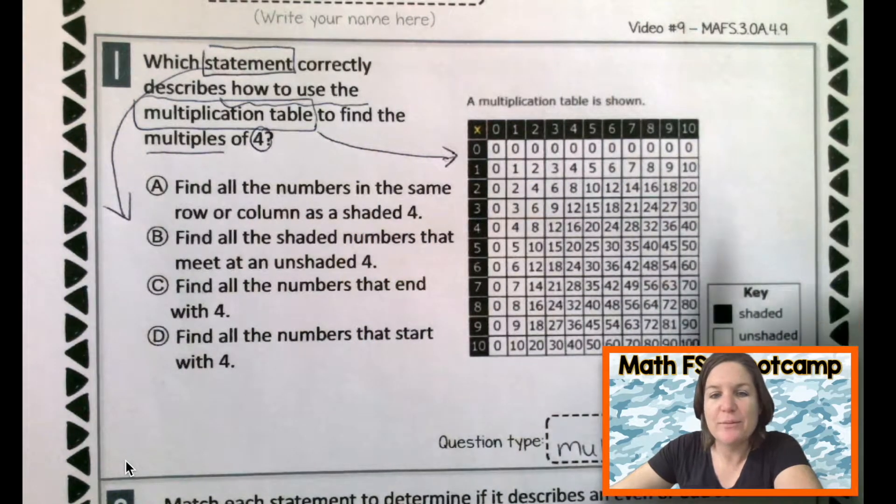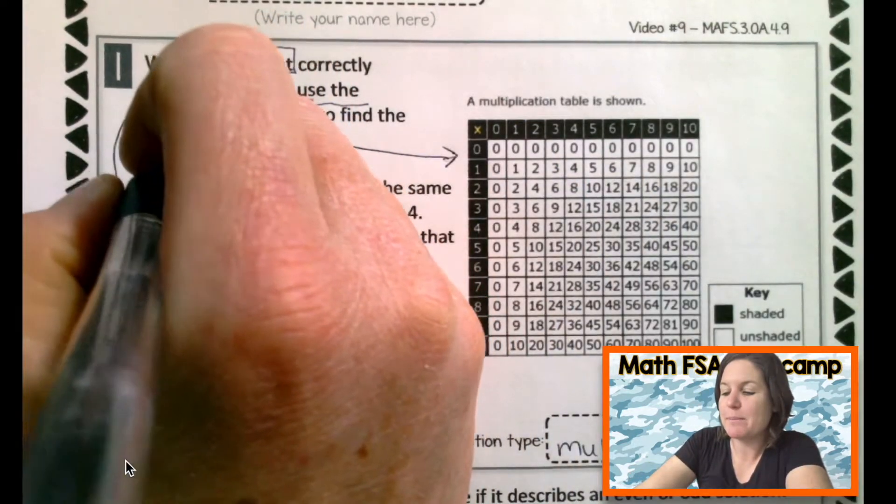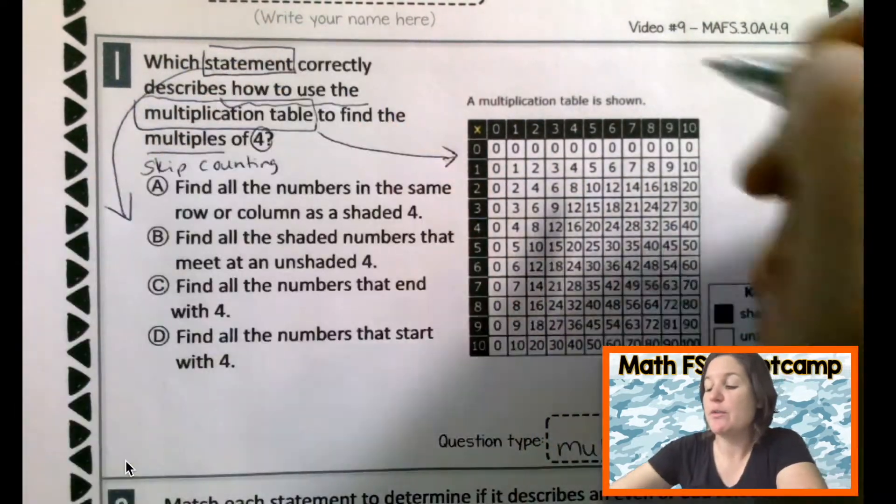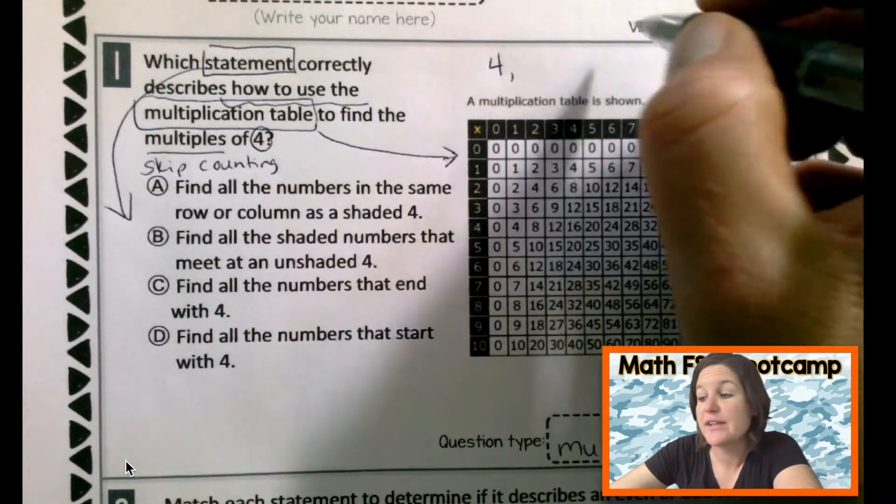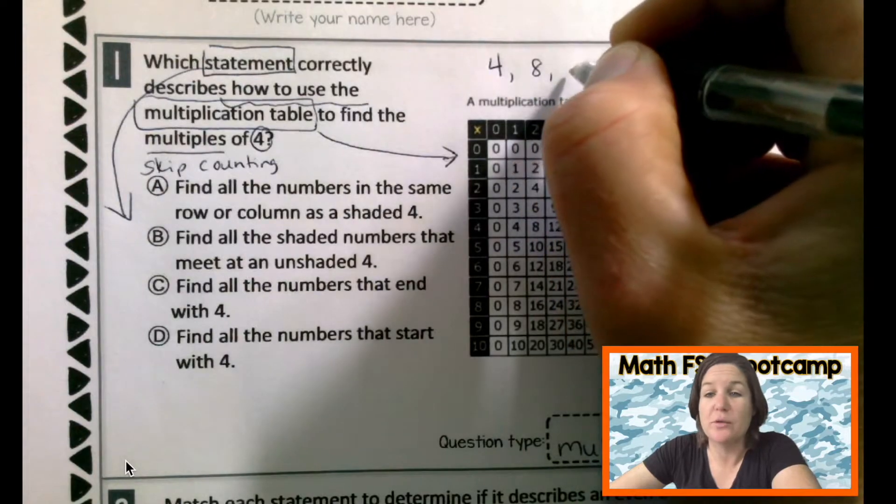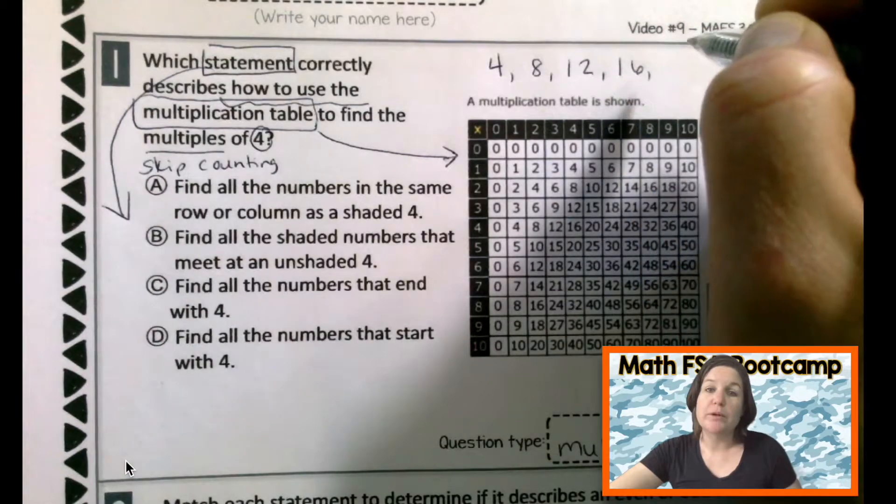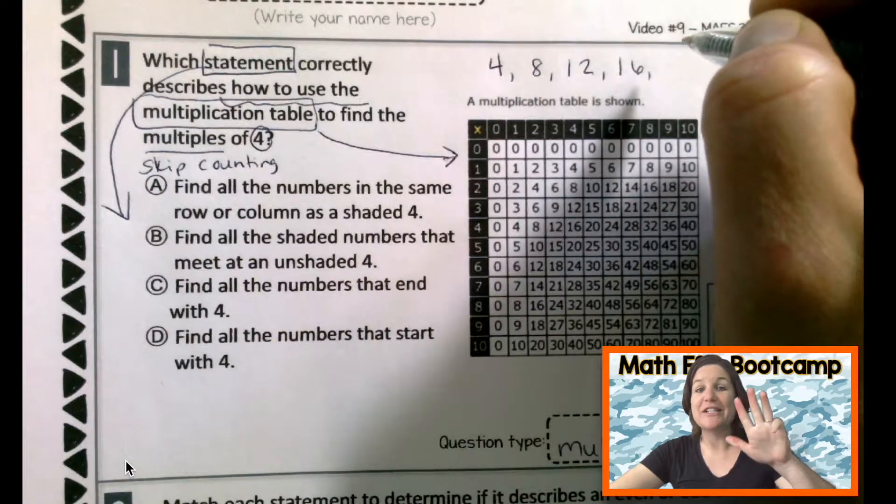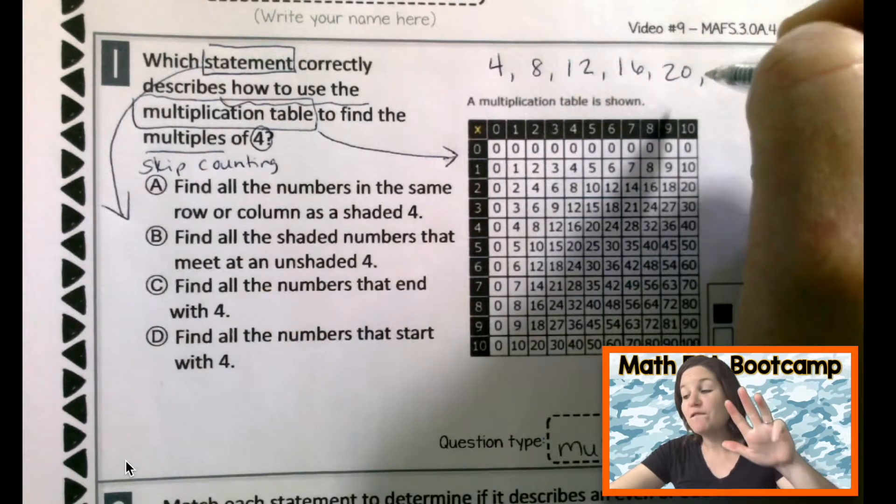Okay, so what are multiples of 4? Well, it's kind of like in the multiplication mashup. That's when you count by. Multiples are like skip counting. So the multiples of 4 would be like 4, plus 4 is 8, plus 4 is 12, plus 4 is 16, plus 4 is 20. Plus 4 is 24.